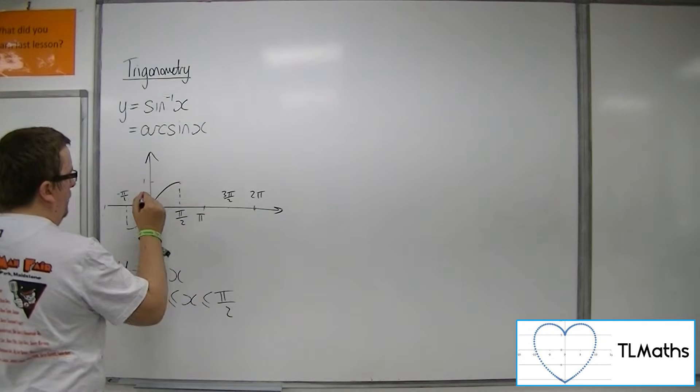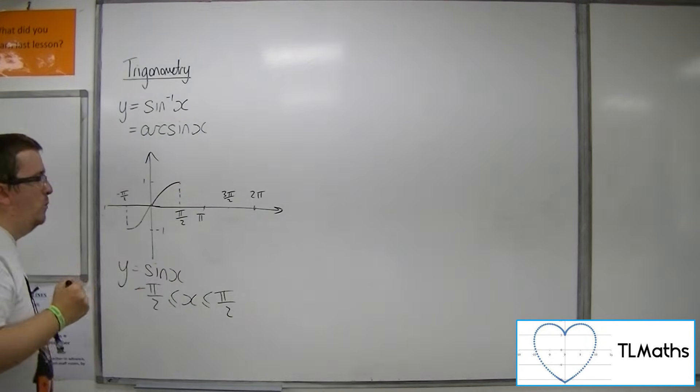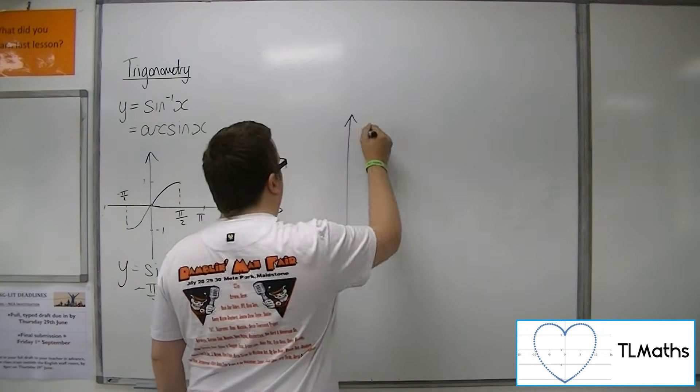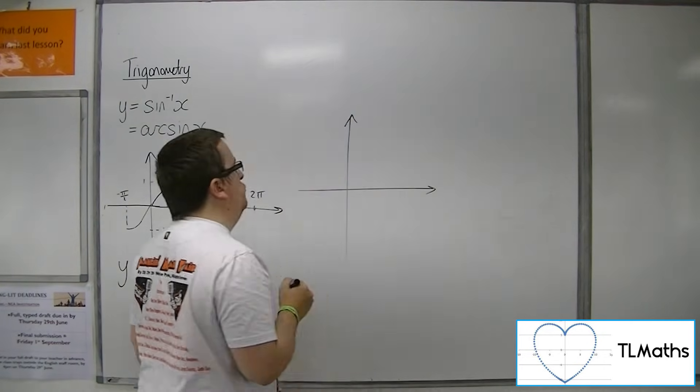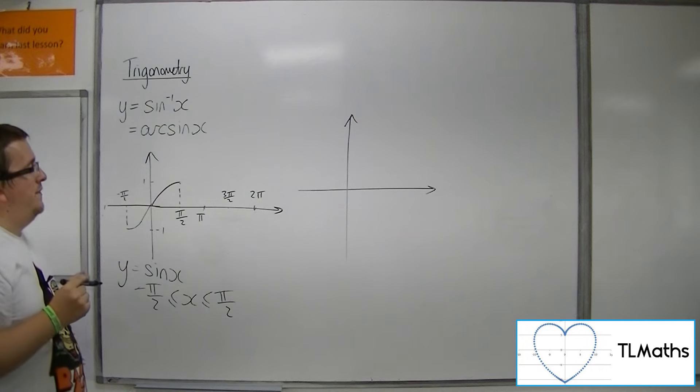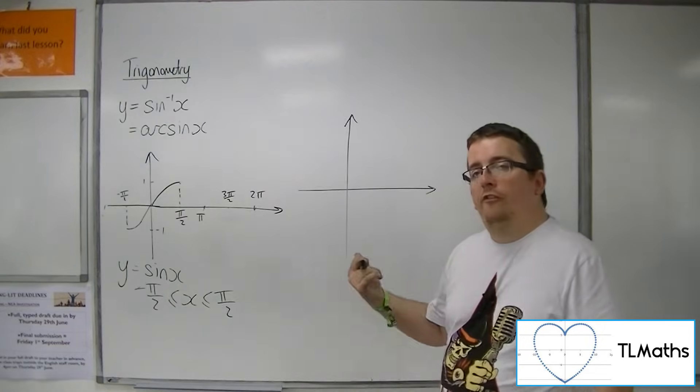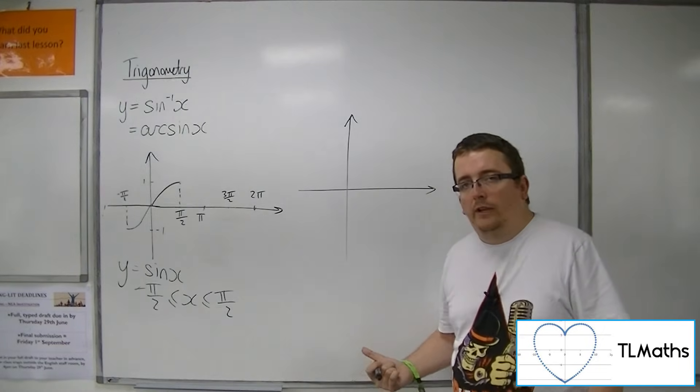Now we know that it's going between minus 1 and 1, so what we can do over here is draw y equals arc sine of x. So every single point, remember, that's on the original curve will be reflected in the line y equals x.